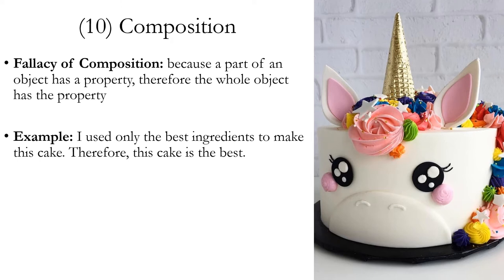The fallacy of composition involves reasoning about parts and wholes. Reasoning about parts and wholes is similar to reasoning about samples and populations. The difference is that a population is generally conceived of as a group of multiple individuals, whereas a whole can be one individual thing, object, or entity. The fallacy of composition argues that because a part of an object has a property, therefore the whole object has that property. Example: I used only the best ingredients to make this cake; therefore, this cake is the best. Maybe I did use the best flour, sugar, eggs, etc., but that doesn't guarantee I mixed them together and baked them in the right way — maybe I even forgot to add one of the ingredients.